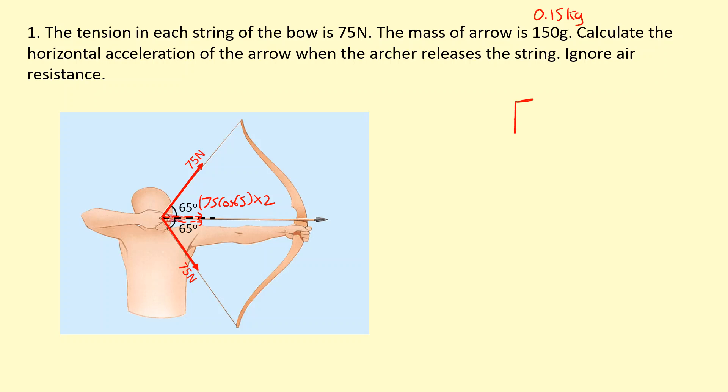So applying Newton's second law, F equals ma, the resultant force is going to be towards the right because he's released it. There's not going to be any force from his hand. So the resultant force will be 2 times 75 cosine 65.